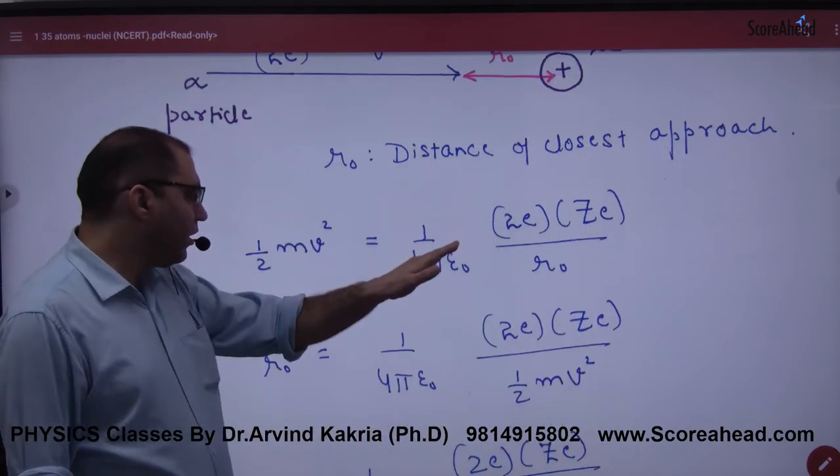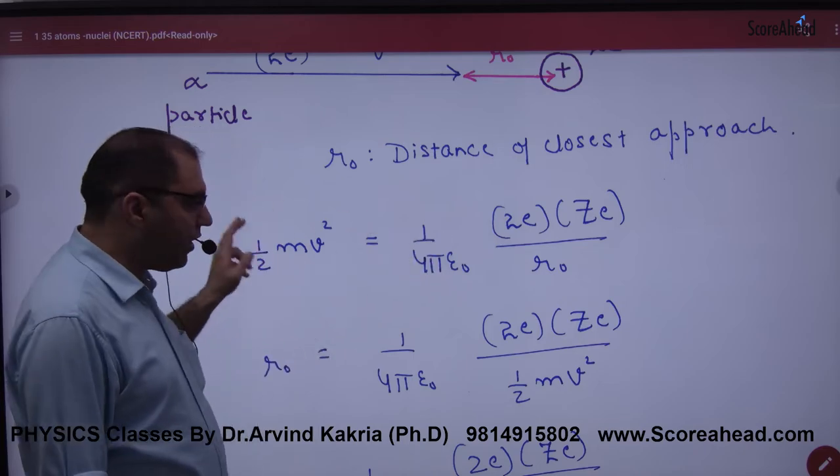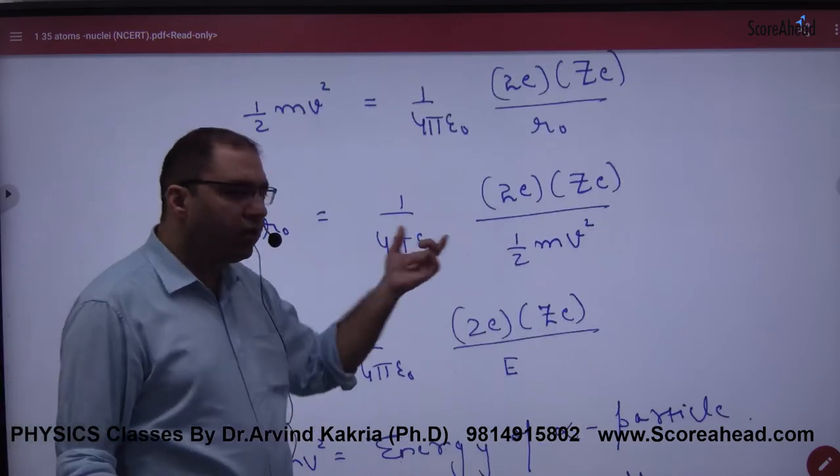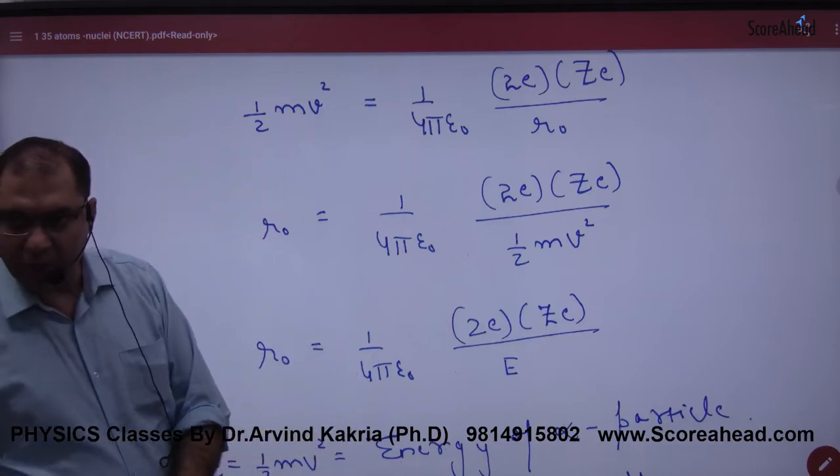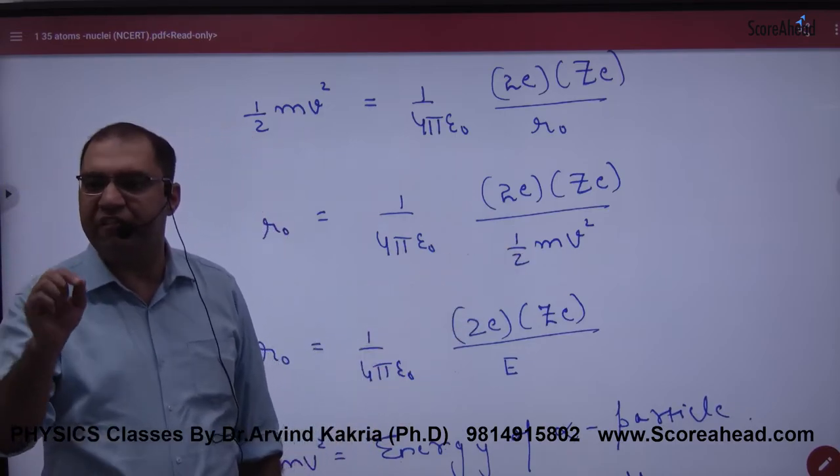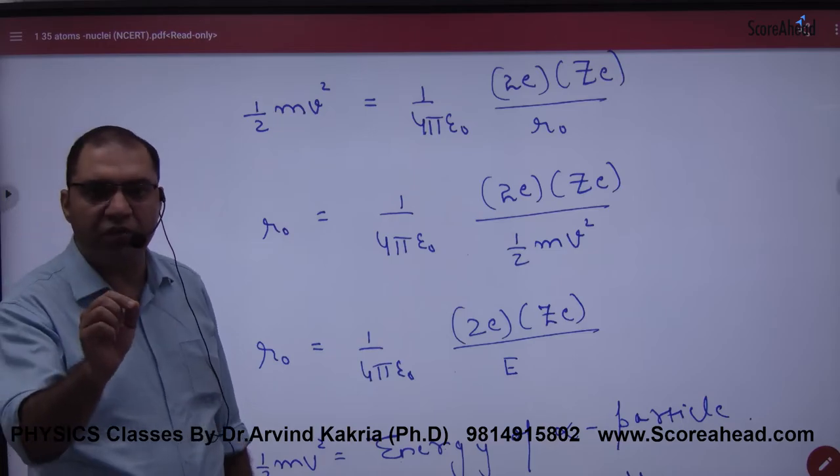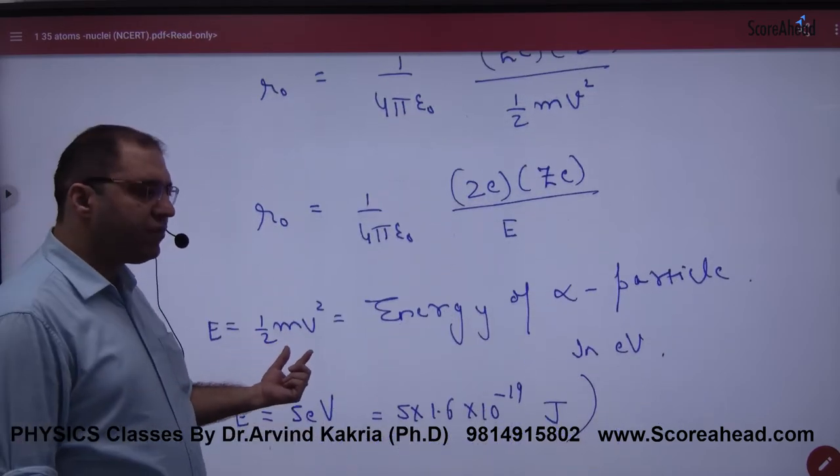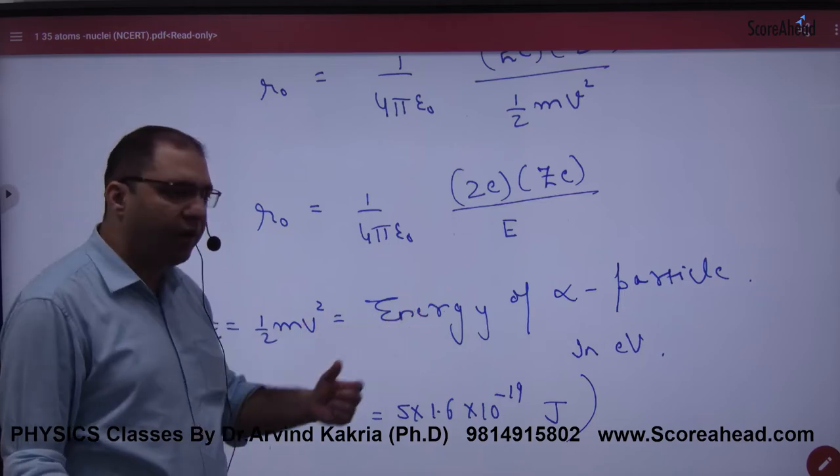So equate it, equate it. R-naught on one side, half mv square on one side. So what has happened? Distance of closest approach equals 1 by 4π epsilon naught times 2ZE squared by half mv square. Half mv square is kinetic energy of alpha particle. Kinetic energy of alpha particle, E also. So I have written half mv square as E, which means energy of alpha particle which is given.